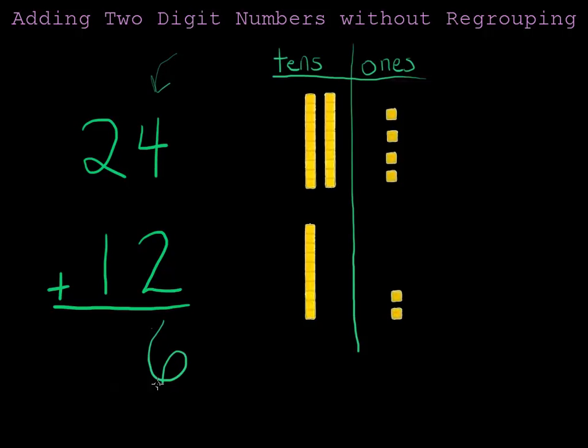Now we can continue and add the tens column. I have one, two, plus one more makes three. That's three tens.